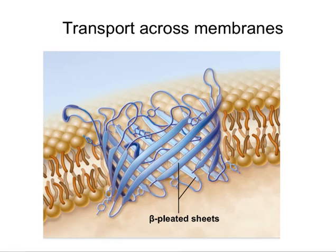Those transport proteins can allow for simple diffusion — they can function just like pores. For example, the molecule we're looking at here is an aquaporin, which allows the passage of water. Water cannot easily diffuse through the plasma membrane on its own; some can sporadically, but it's not efficient. Aquaporins allow water molecules to move in and out of the cell.